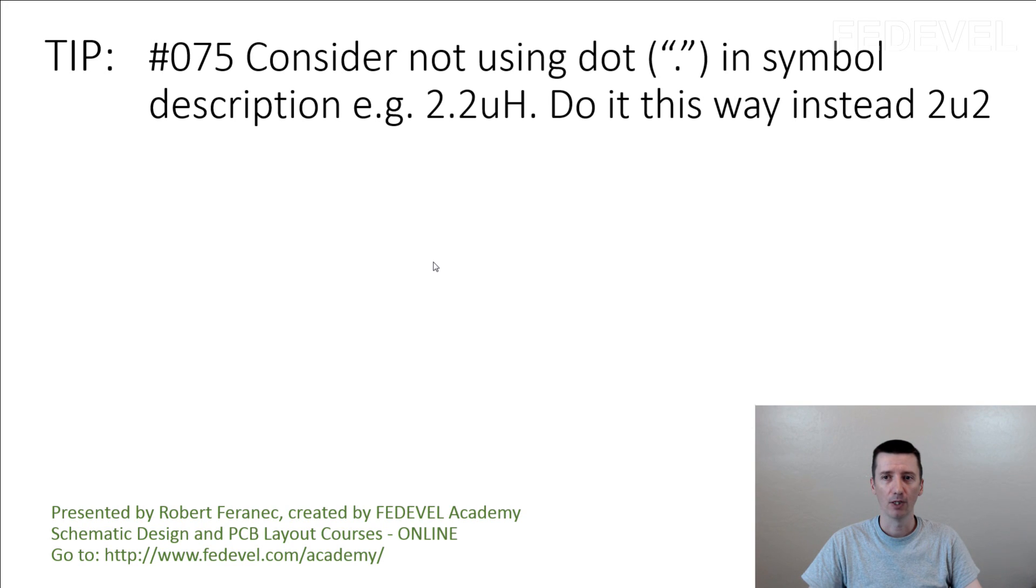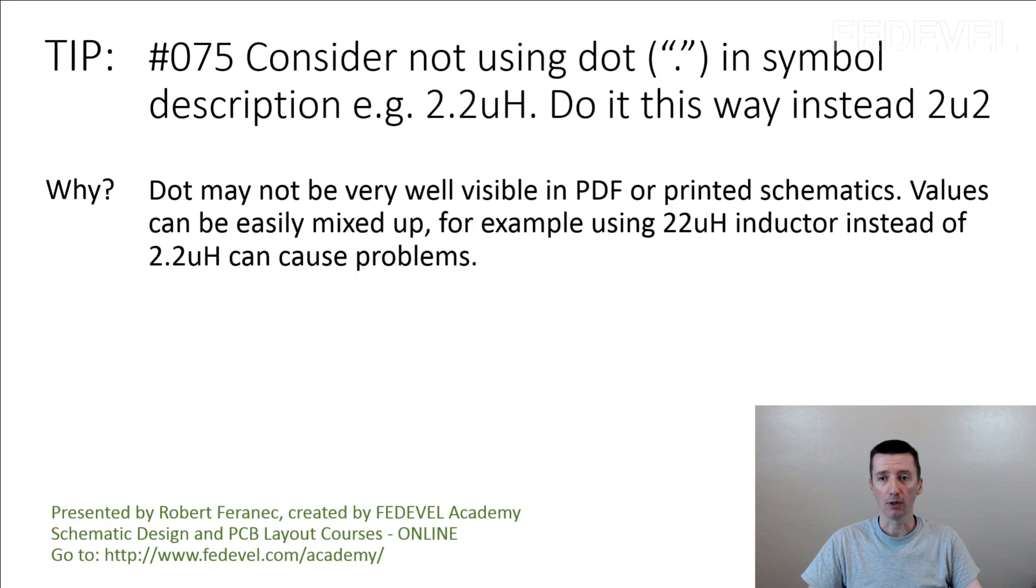Tip number 75, consider not using dot in symbol description. Why? Dot may not be very well visible in PDF or printed schematics. Values can be easily mixed up, for example, using 22 micro Henry inductor instead of 2.2 micro Henry can cause problems.